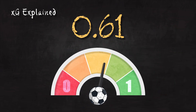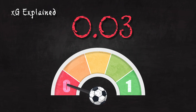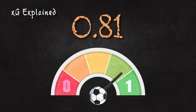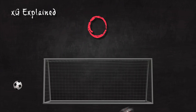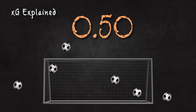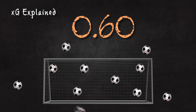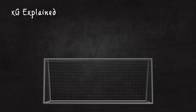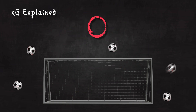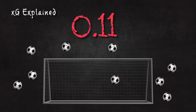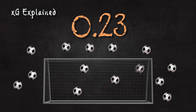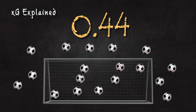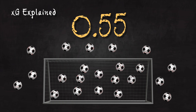So let's do a recap. XG essentially tells us how likely a shot will result in a goal based on set criteria such as distance and angle. Over a long enough timeline, a team's XG should reflect the actual number of goals they score. Likewise, the XG a team surrenders should reflect the actual number of goals they give up. A team's cumulative XG over a given number of matches can give us a more accurate picture of performance — they may have been losing recent matches while generating chances of higher quality than their opponents, and we may then expect them to start putting those chances in the net.